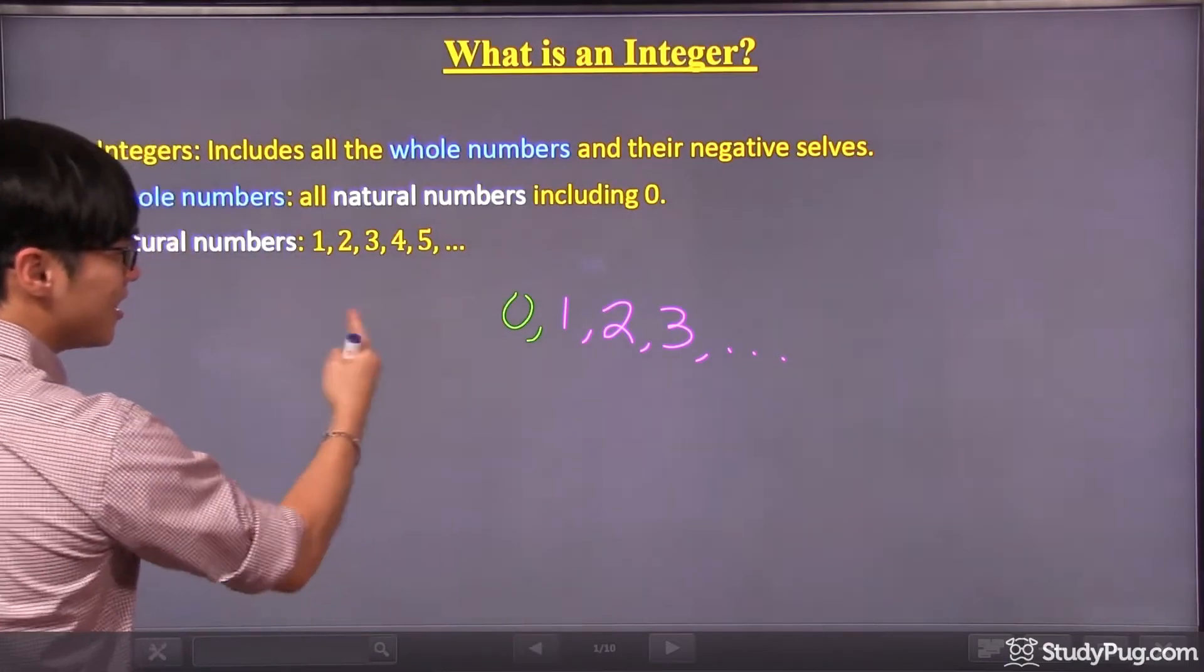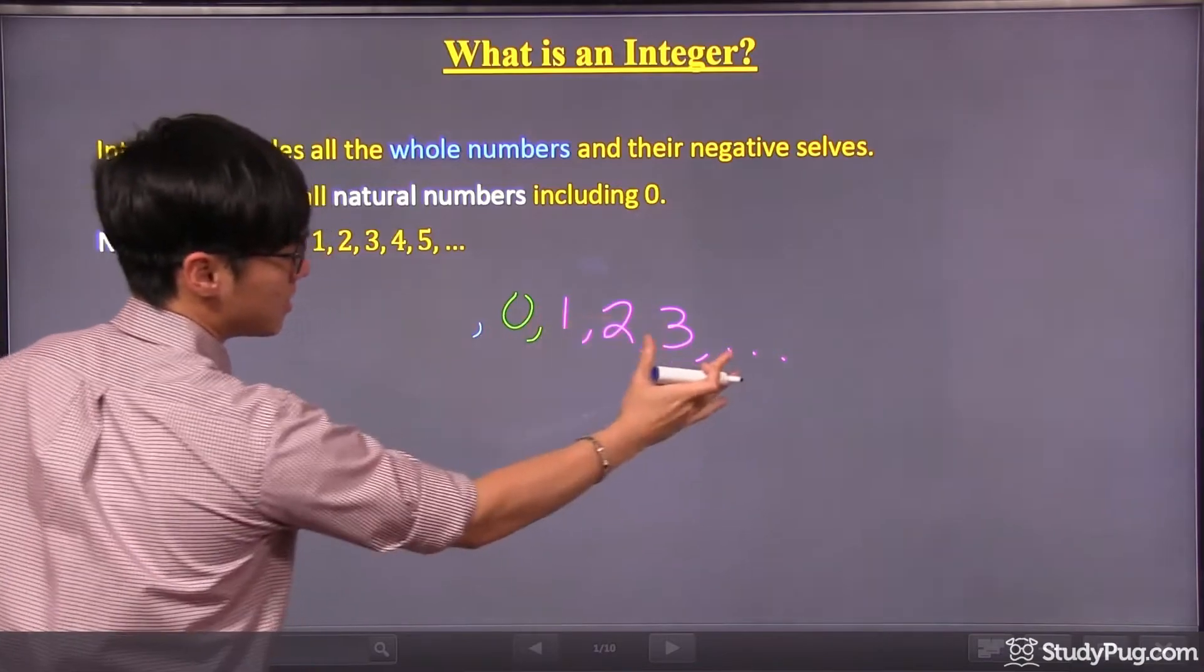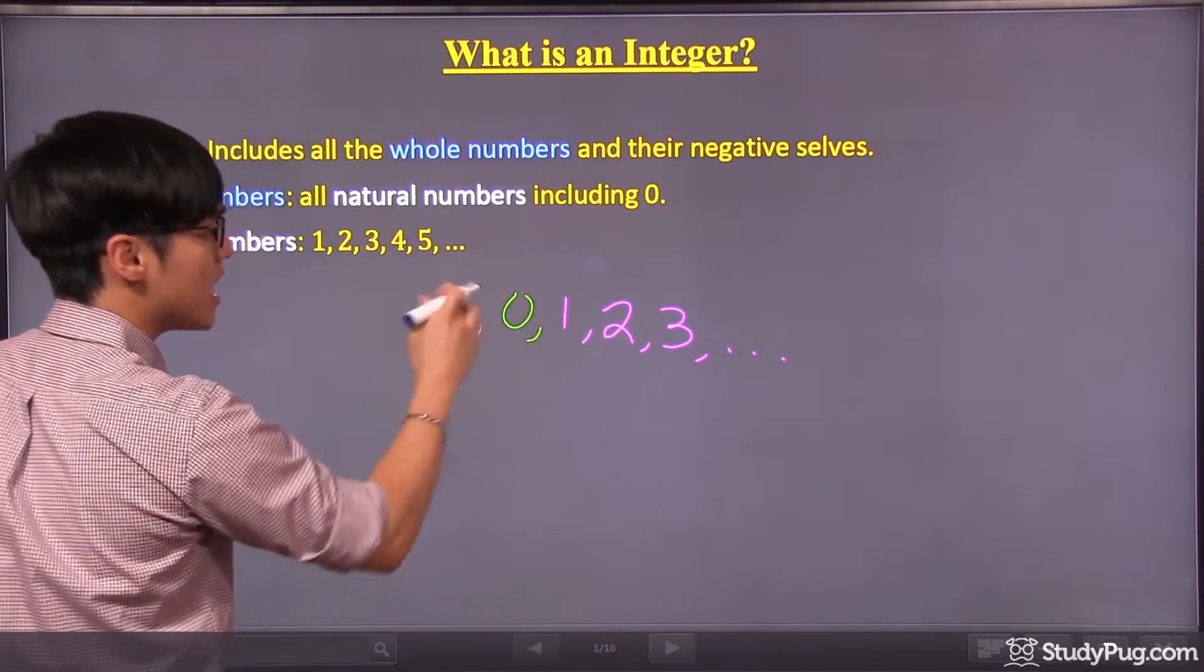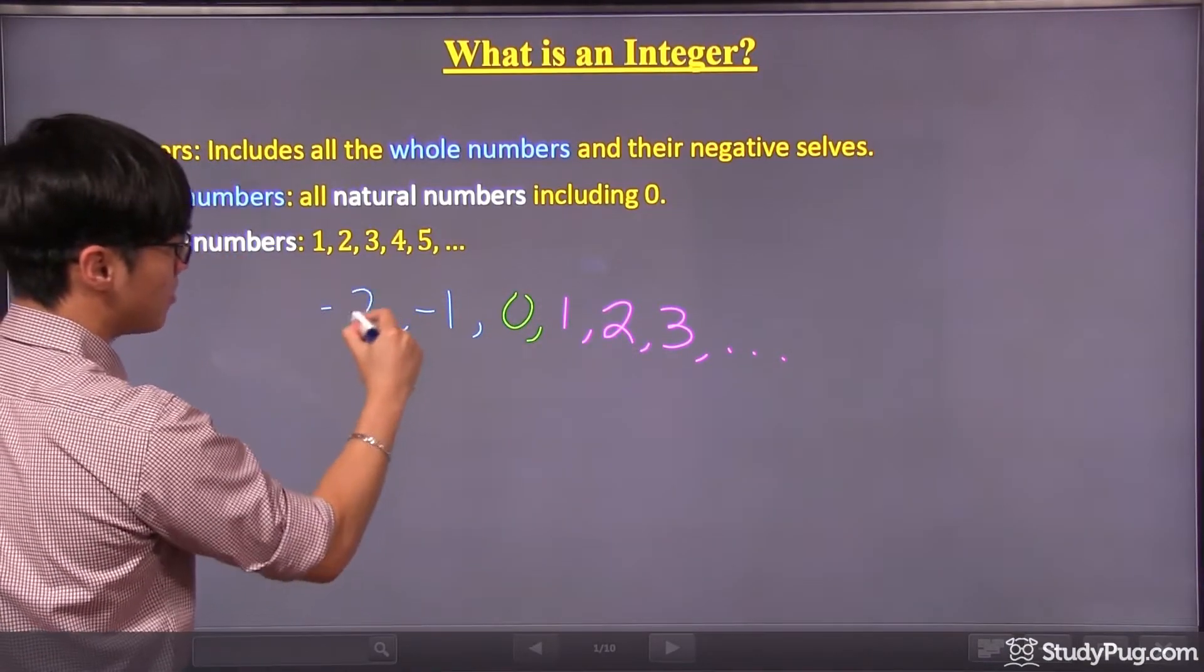So towards the left of zero, we can now write the negatives of the numbers we have. So one, the negative of it will be negative one. For two, the negative of it will be negative two.